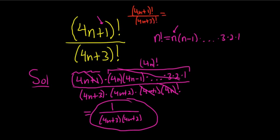So the bottom one is bigger, so you keep the top. Then on the bottom, it's 4n plus 3, 4n plus 2. And then the next one is 4n plus 1, 4n, 4n minus 1. So the rest of it is just 4n plus 1 factorial.